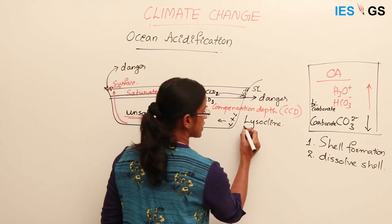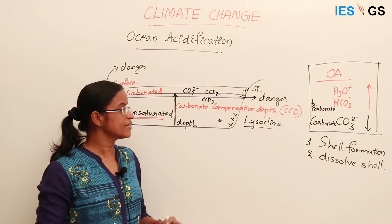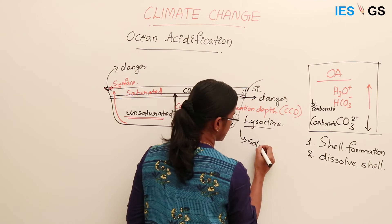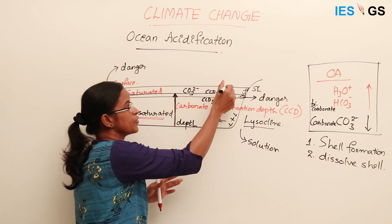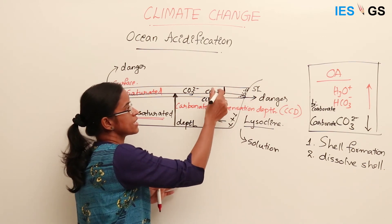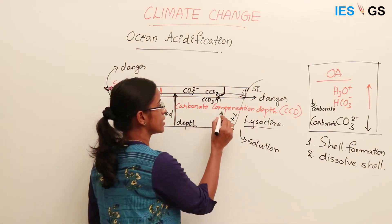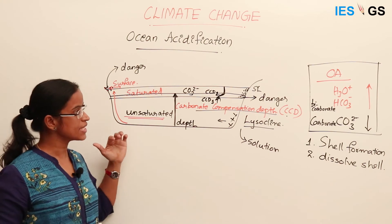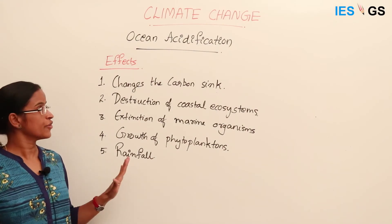There is another related term: the lysocline, similar to the halocline and thermocline. The lysocline is the region where a rapid change in the dissolution property of the solution occurs. Above this layer there is no dissolution of carbonate ions, but at this layer the dissolution rate increases dramatically. This layer is the lysocline, and it can also be denoted by the term CCD. This summarizes the effect of changing carbonate ion concentration in the marine ecosystem.